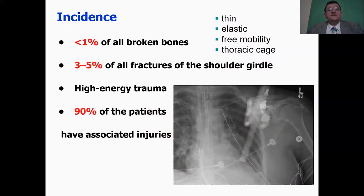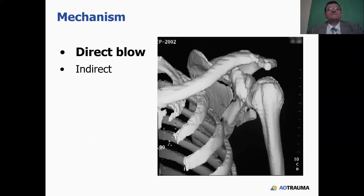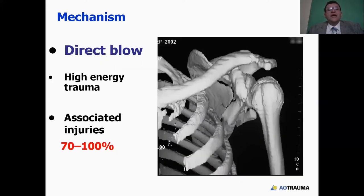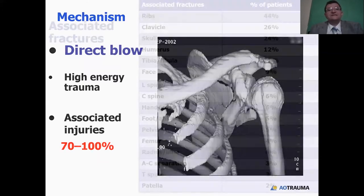90% of these patients have associated injuries. The mechanism of injury is usually a direct blow, although indirect blows can happen usually through falling on an outstretched hand, and the humeral head hits the glenoid to fracture it or cause a fracture dislocation of the shoulder joint. However, direct trauma with high-energy is the most common mechanism of injury and is associated with other injuries in 70% to 100% of patients, depending on which studies.